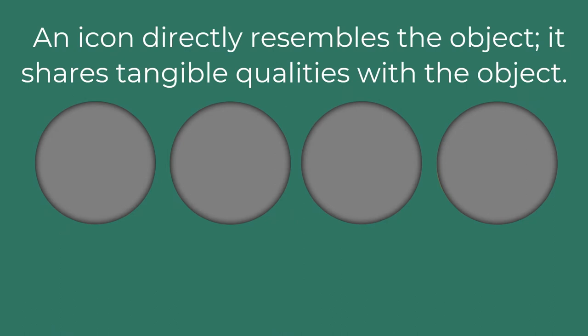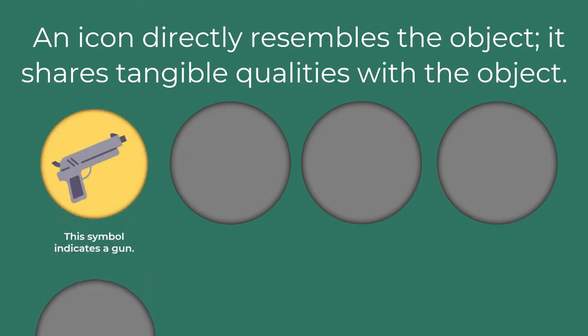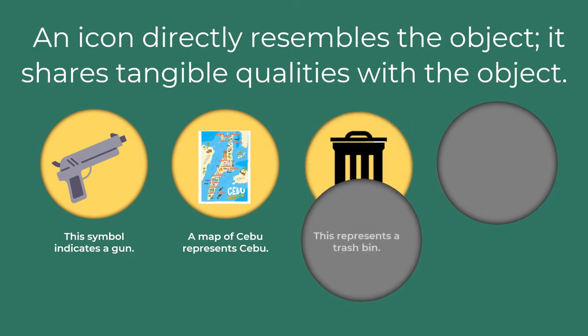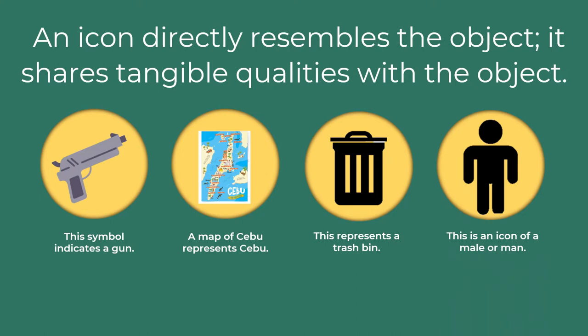An icon directly resembles the object — it shares tangible qualities with the object. For example, a cop symbol indicates a cop, a map of Cebu represents Cebu, another icon represents a trash bin, and lastly there is an icon of a male or a man.